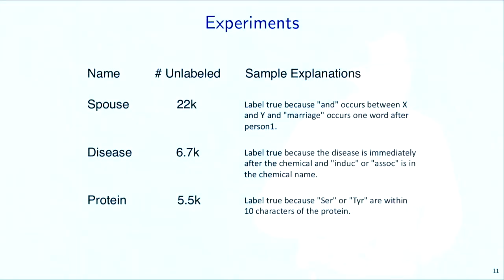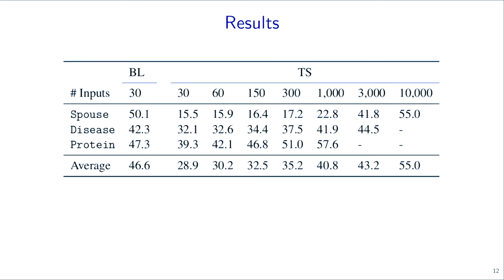So how well does this work in practice? We tested this on three relation extraction datasets: detecting whether two people are spouses, detecting whether a chemical and a disease are related, and detecting whether a protein and a kinase are related. The top of the results shows number of examples labeled by traditional supervision (TS). As the number of examples goes from 30 to 60 to 150, accuracy improves from around 15, which is unusable, to something like 50 — but it takes thousands of examples to get there.